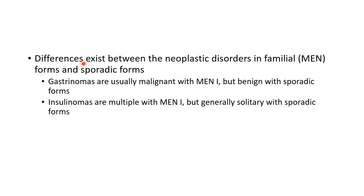There are certain differences between neoplastic disorders in the familial (MEN) forms and sporadic forms. Gastrinomas are usually malignant with MEN1, but they are benign with sporadic forms. Insulinomas are multiple with MEN1, but generally solitary with sporadic forms.